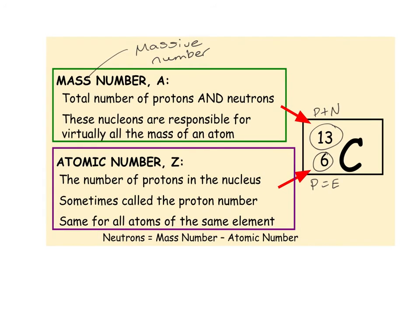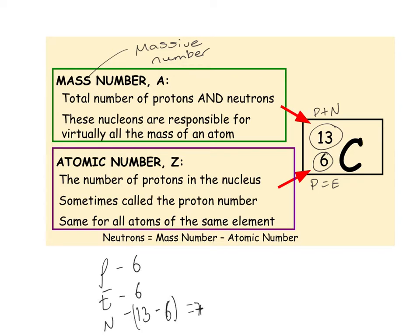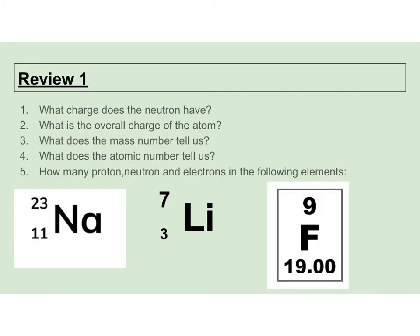What they might also ask you to do is work out protons, electrons, and neutrons. You use your atomic number to work out protons - it's going to be the same for electrons - and then for neutrons you do your mass number take away your atomic number. That's the kind of thing they might also ask you. Pause the screen and have a go at these questions.